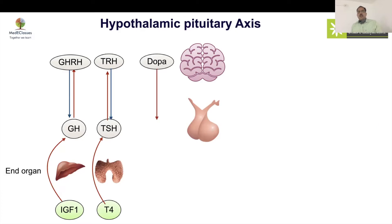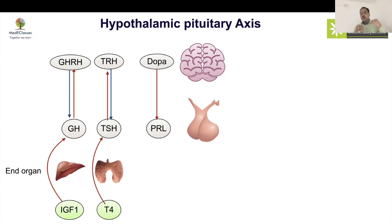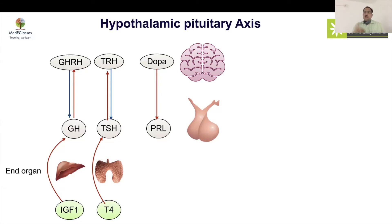The third important hypothalamic regulation is at the level of dopamine, which inhibits prolactin production. This is the only inhibitory hypothalamic hormone — all other hormones are stimulatory. Because prolactin is continuously suppressed, if a child presents with pituitary deficiency, the prolactin level is key: low prolactin indicates damage at the pituitary stalk or below, while lesions at the stalk and above will give high prolactin. Prolactin is the most important differentiator of pituitary etiology.